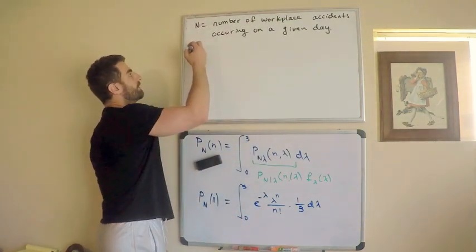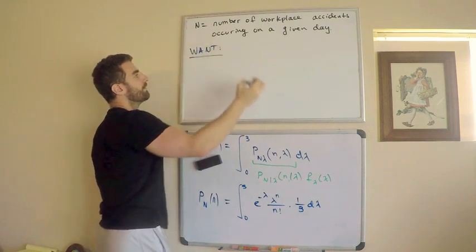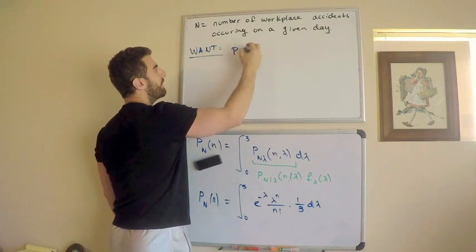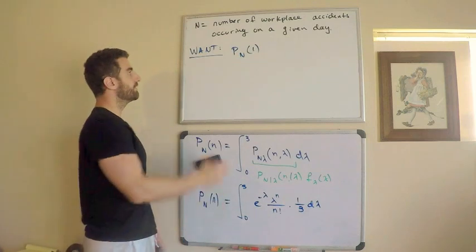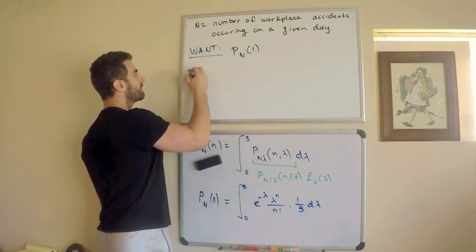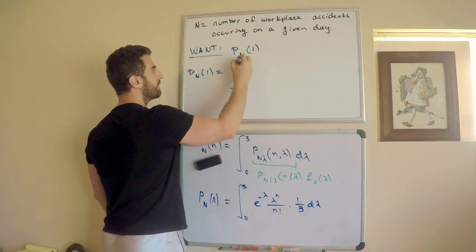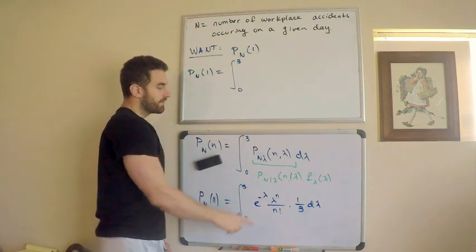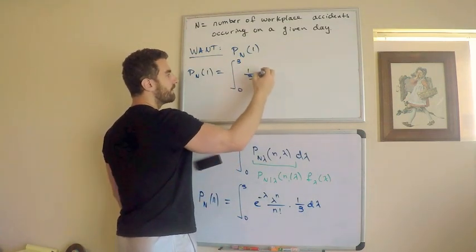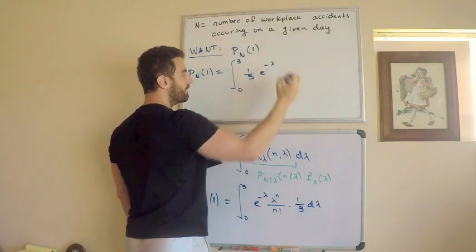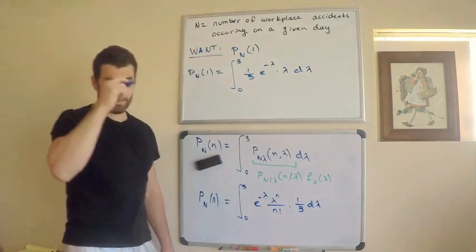So we want, what are we after? We want the following. The question says we want to find, we want to find P_n of 1. Well, I have it. I'm going to just plug in 1 here. So P_n of 1 is equal to the integral from 0 to 3. Replace n with 1. This gives me, I want to bring the one-third out. Now this is one-third e to the negative lambda times lambda d lambda.